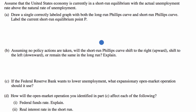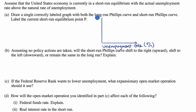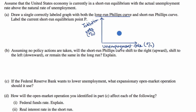If we're thinking about Phillips curves, we're going to have two axes. Our horizontal axis is going to be the unemployment rate, expressed as a percentage. Our vertical axis is going to be our inflation rate, also expressed as a percentage. Let's start with the long-run Phillips curve — that's just going to be fixed at the natural rate of unemployment, so it's just a vertical line. Let me label that as our long-run Phillips curve.